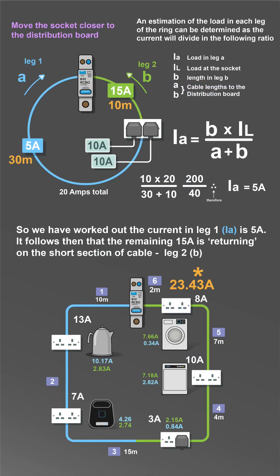Shorter legs, less resistance, more current. That's why sharing the load in a ring is important. If a load is moved closer to the origin, you'll have less resistance and more current.